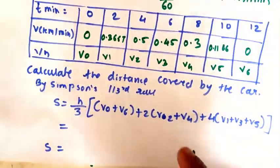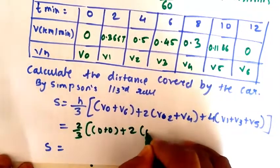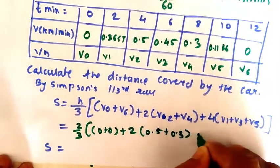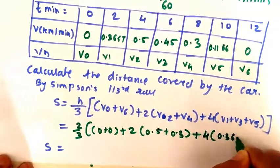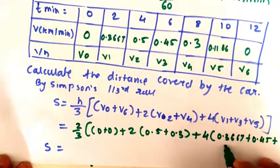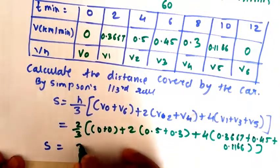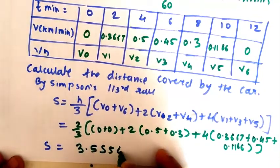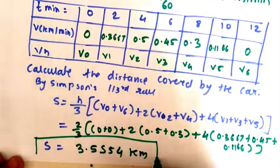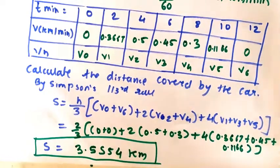So we will get 2/3 into bracket, 0 plus 0, plus twice 0.5 plus 0.3, plus 4 times 0.3667 plus 0.45 plus 0.166. So further simplifying, we will get the value of s as 3.5554 km. So this is the value of s which is required with the help of Simpson's 1/3rd rule. So I hope you understood this numerical. Thank you, thanks for watching.